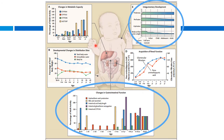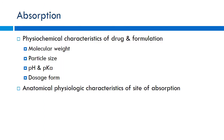We'll look at the changes that occur over time with small children: how kinetics change, how absorption differs, and how distribution, metabolism, and excretion develop as the infant matures. Starting with absorption, we look at changes in gastrointestinal function and integumentary development. A newborn's skin is pretty thin and underdeveloped, which can lead to toxicity through topical drugs. We'll also consider physiochemical properties of drugs affecting absorption.